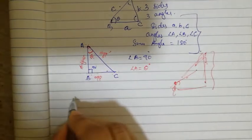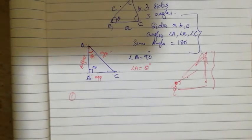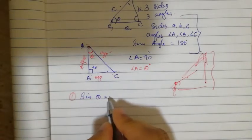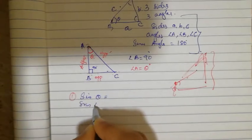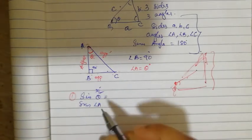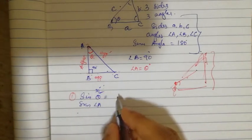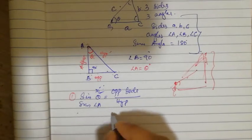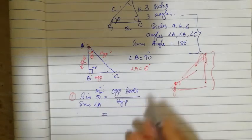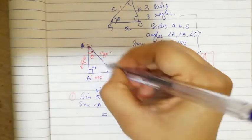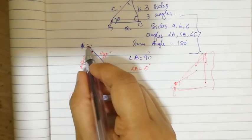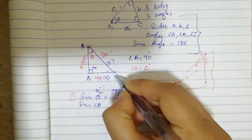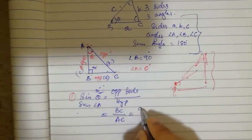Trigonometric relation 1: sin theta is equal to opposite side by hypotenuse. Based on angle theta, the opposite side is BC and the hypotenuse is AC, so sin theta equals BC by AC. We can also write this as small a by small b. The second relation is cos theta, which equals adjacent side by hypotenuse. Adjacent side is AB and hypotenuse is AC, so cos theta equals AB by AC, which we write as c by b.